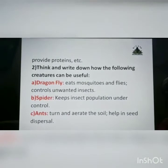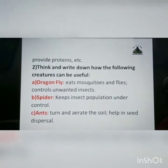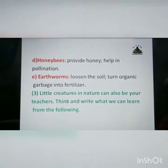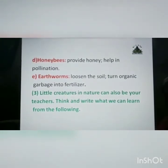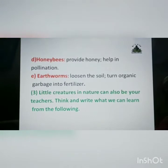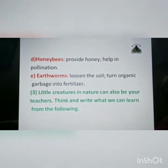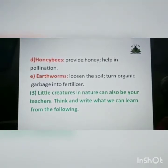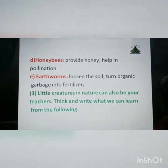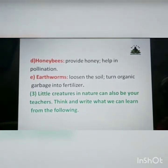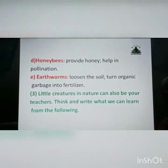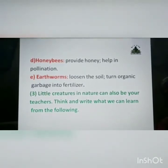Ants — turn and aerate the soil, help in seed dispersal. Honeybees — provide honey, help in pollination. Earthworms — loosen the soil and turn organic garbage into fertilizers.